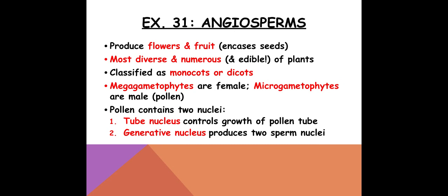The pollen will have two nuclei. One is called a tube nucleus that is going to grow a pollen tube — once the pollen has reached the stigma, it will grow this pollen tube. Then there's what we call the generative nucleus, which is going to have two sperm. So we are going to see double fertilization.